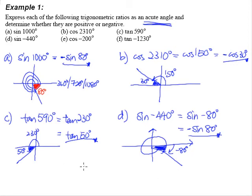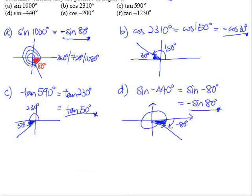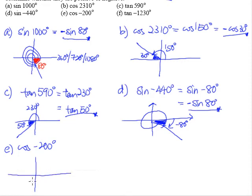Let's move on to part E: cosine negative 200 degrees. We need to figure out where negative 200 degrees is. It is less than one full clockwise round but more than 180 degrees clockwise, so it passes negative 90 and negative 180.